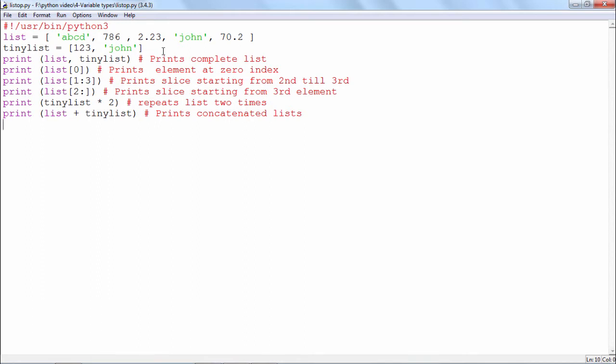To begin with, I have defined two list objects, list and tiny list, and I am just printing them out. List[0] is going to result into the element from the list object which is at the 0th index. Expect 'abcd' to be printed.